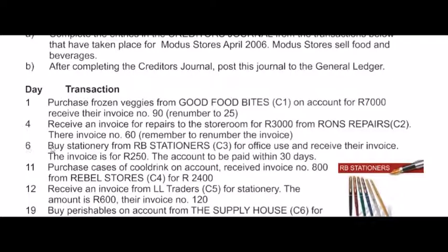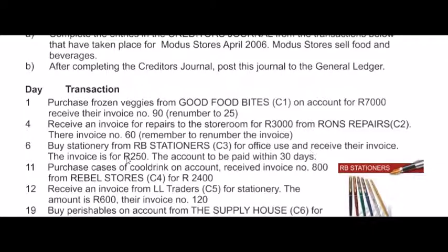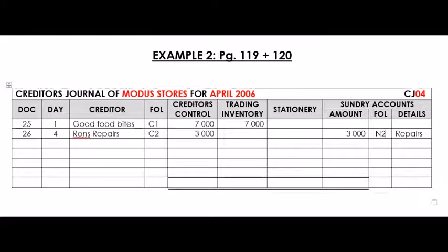On the 6th, we buy stationery from RB Stationers, creditor number 3, for office use, and receive their invoice. This indicates it's a CJ transaction. The invoice is for 250 Rand and the account is to be paid within 30 days. We renumber the invoice to number 27. It's on the 6th, the creditor's name is RB Stationers, creditor number 3, and the value was 250 Rand for stationery.